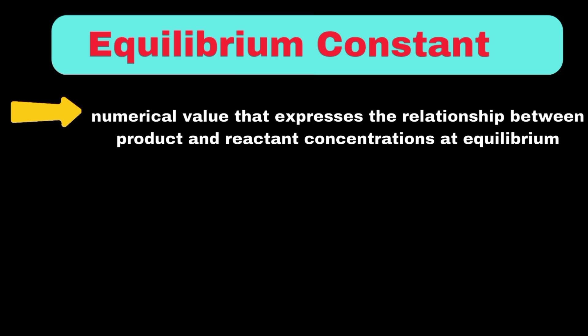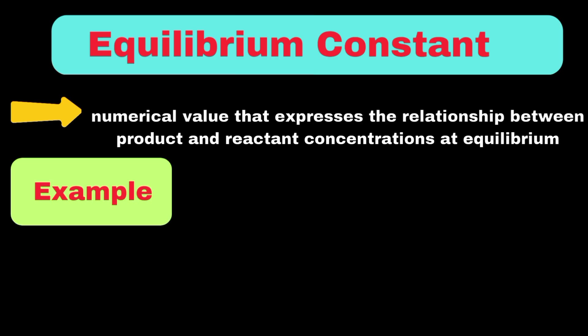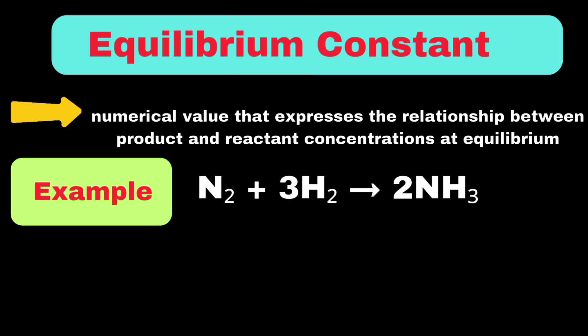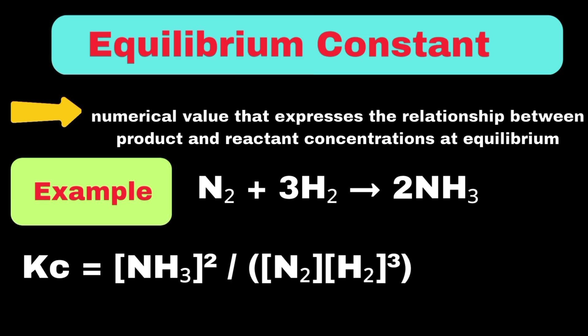Let's take the example of ammonia formation from nitrogen and hydrogen gases. The equilibrium constant Kc tells us the ratio of ammonia concentration to the concentrations of nitrogen and hydrogen at equilibrium. A larger equilibrium constant means the reaction favors product formation, while a smaller one indicates more reactants at equilibrium.